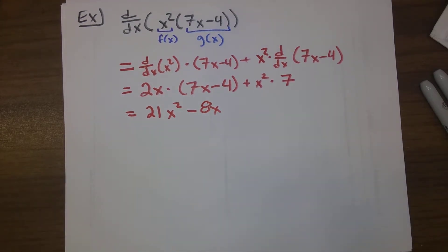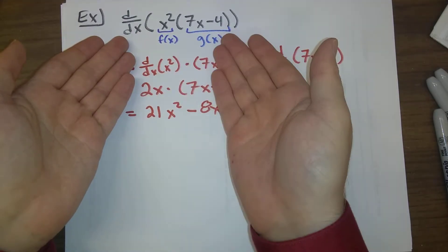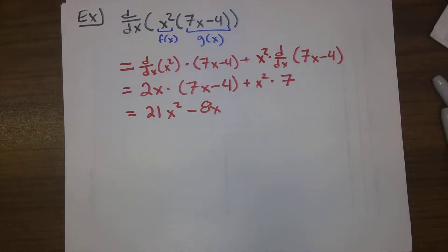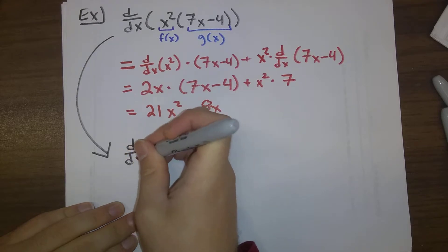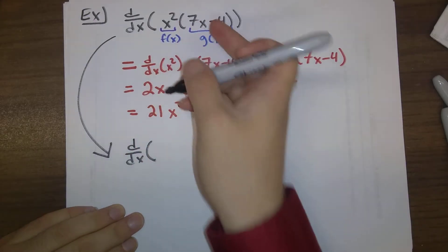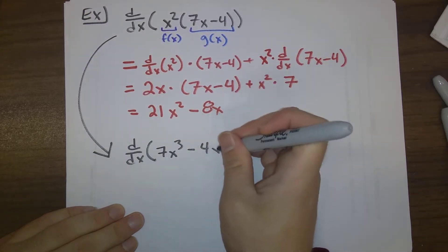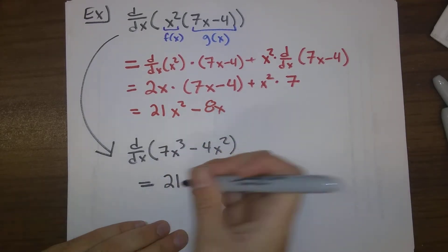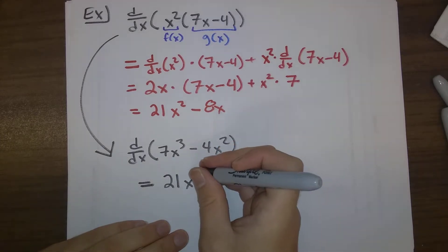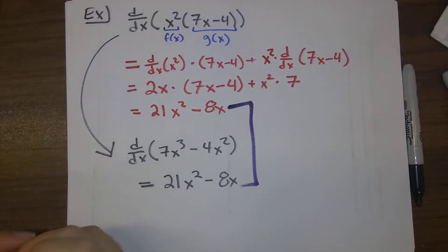I should note that when we have the product rule, one way that we can check to make sure our answer is right is that we could actually go back up here, expand out the multiplication, and see that yes, we do come up with the same thing. We could have said this is the derivative of x² times 7x is 7x³ minus 4x². And so this derivative is, using the power rule, 21x² minus 8x. And yes, we see those are exactly the same things.